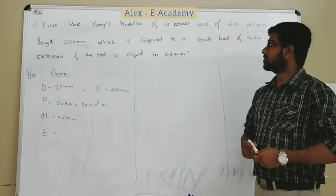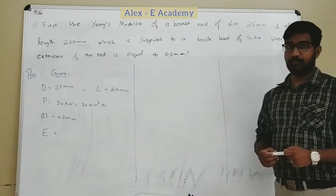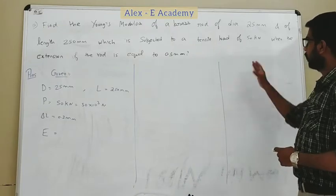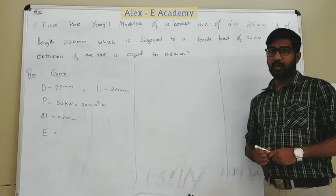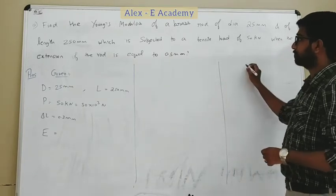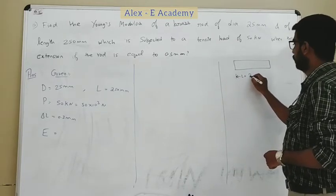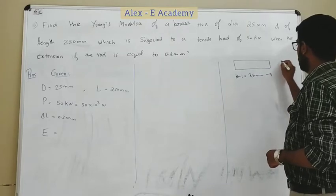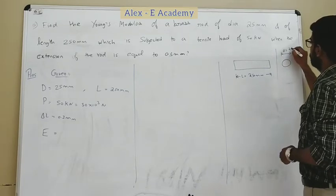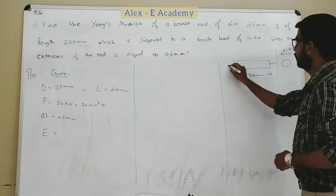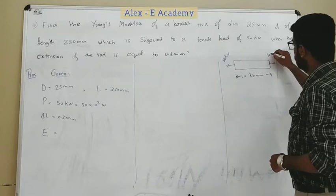Now let's see the second problem. The question is: find the Young's modulus of a brass rod of diameter 25 mm and of length 250 mm, which is subjected to a tensile load of 50 kN, when the extension of the rod is equal to 0.3 mm. The length L is equal to 250 mm and diameter D is equal to 25 mm, with a tensile load of 50 kN.